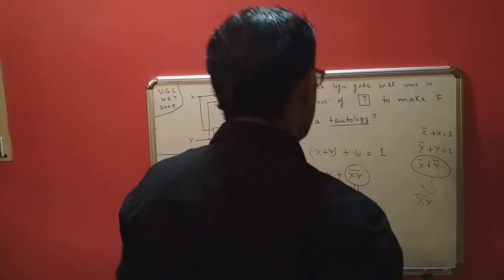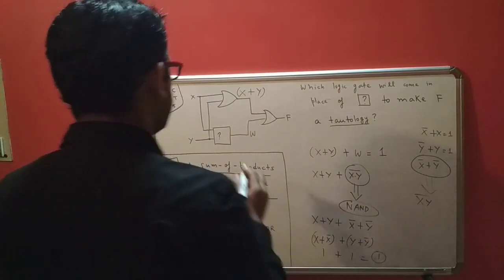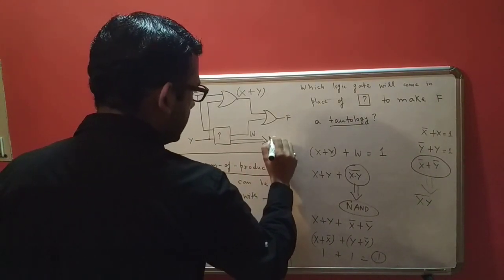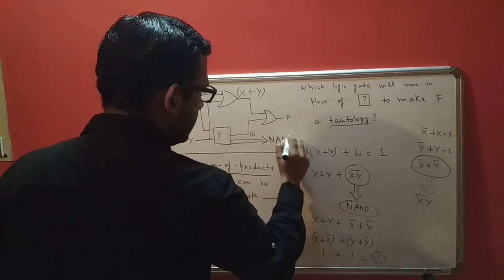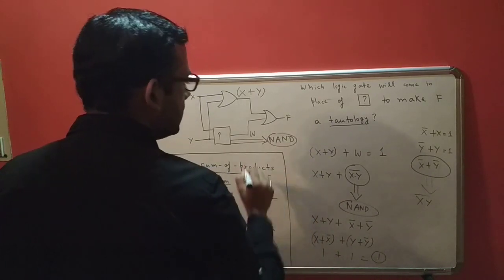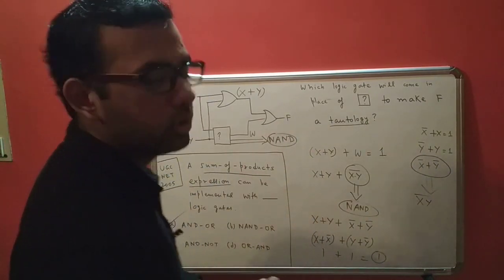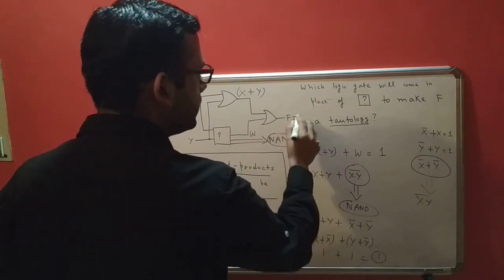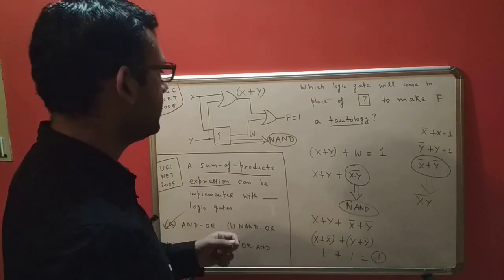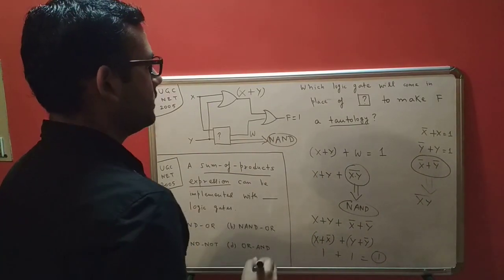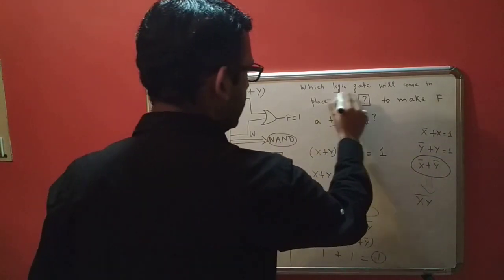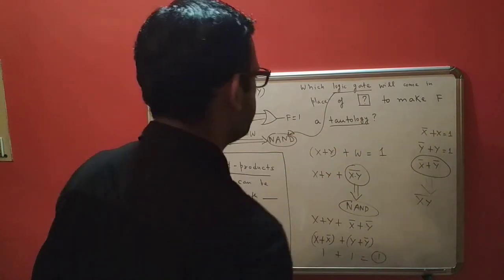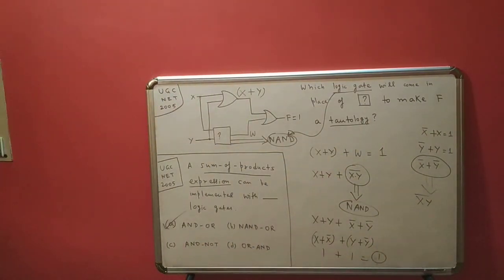We know that if you OR two ones you get a one as the final answer. So if we replace this box with a NAND gate, then for all possible combinations of inputs f gives us a one — f is a tautology. The final answer is the NAND gate.